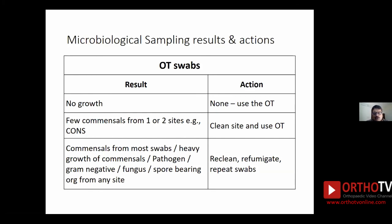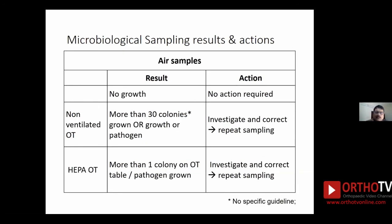Regarding OT swab results: the ideal result is no growth. If you get growth of a few common commensals like coagulase-negative Staphylococcus from just one or two sites, clean that area and proceed with surgery. But if you get heavy growth from many places, or heavy growth from one or two places, or any pathogen like Staphylococcus aureus, any gram negative, any fungus, or any spore-bearing bacteria from any swab, the OT should be re-cleaned, fumigated again, and repeat swabs taken to prove the fumigation has worked and swabs are negative.